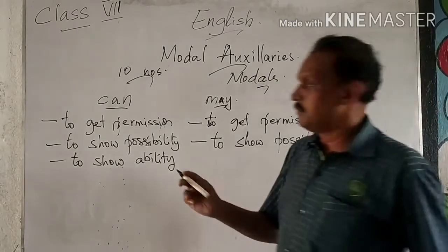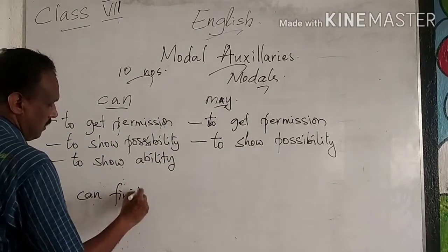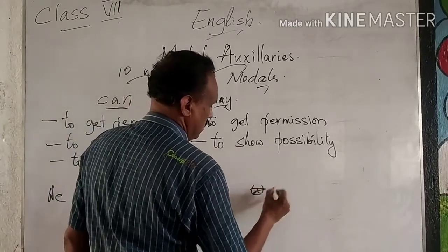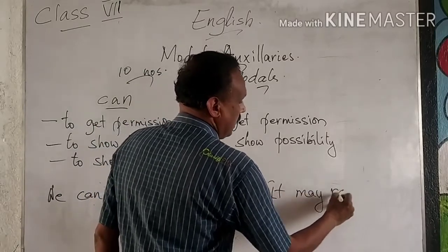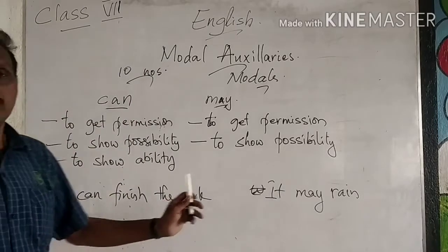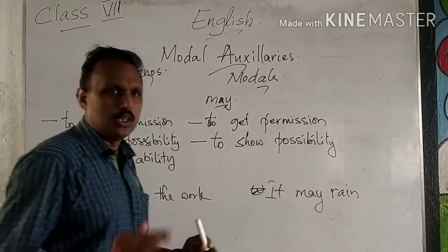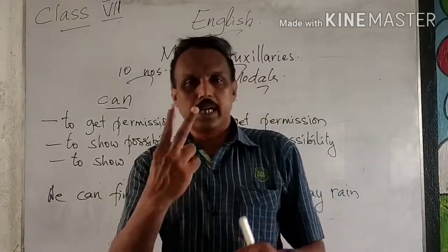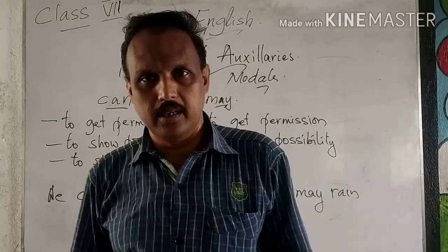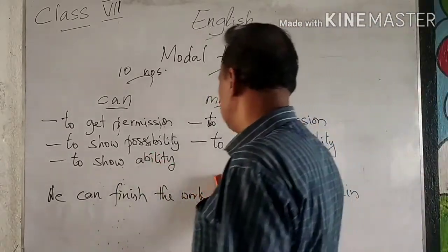For example: 'We can finish the work in two days' and 'It may rain in the afternoon.' Both are showing possibility only. 'We can finish the work in two days' means we are not sure, but there is a possibility — if we all work together, we can finish it. 'It may rain' means we are not sure — it may rain in the afternoon or in the evening.